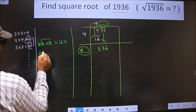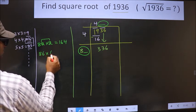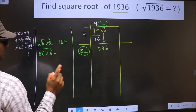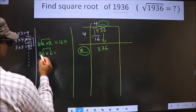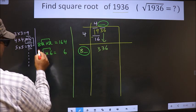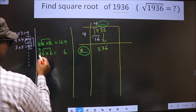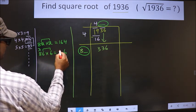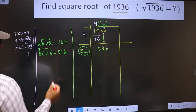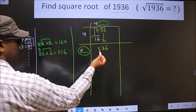If I take 6, I should also multiply by 6. These two numbers should be same. 6 into 6, 36. 6, 3 here. 6 into 8, 48 plus 3, 51. 516. This is beyond this number.